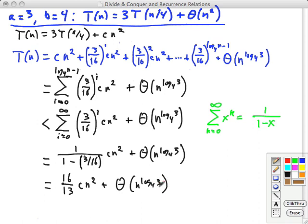Log base 4 of 3 is less than 2 because this is a number that you raise 4 to the power of to get 3. And if you raise 4 to the power of 2, you get something a lot bigger than 3. So this is an exponent much smaller than n squared. So we can go back to our world of asymptotic terms and say this is just big O of n squared. Now why did I write O instead of theta?